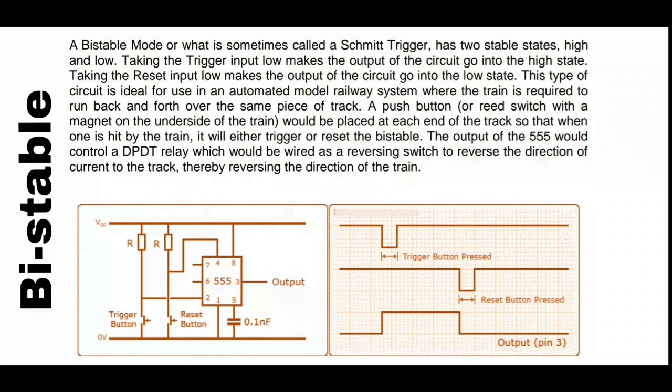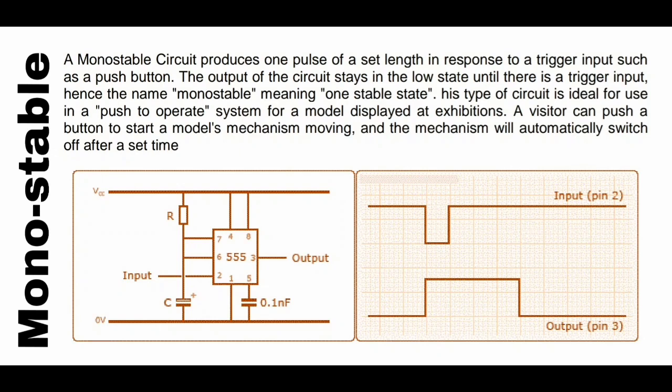Now comes monostable mode. A monostable circuit produces one pulse of a set length when triggered. The set length means whatever output time you set. The best example is a lamp — you press a button and the lamp stays on for a set time, like 10 minutes. If you have any project idea requiring a circuit that runs for a limited time, this is the mode to use.